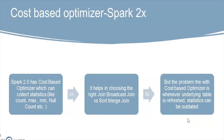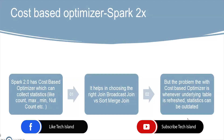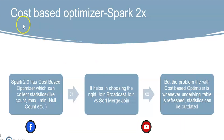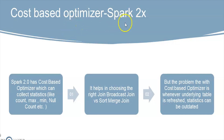Before jumping into Spark 3x, I wanted to give some understanding of the 2x version — what are the interesting features in 2x, and what are still some disadvantages we face with the 2x version, which are covered in 3x. In 2x, we have something called cost-based optimizer. This is a very interesting feature in 2x, so let's see what happens with the CBO.